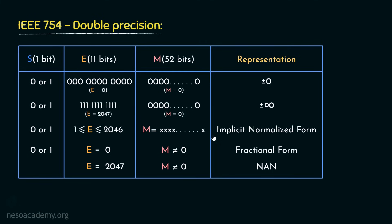Going through the chart: when the exponent bits are all 0s and the mantissa 52 bits are also all 0s, based on the sign bit we can represent positive 0 or negative 0. When the exponent is all 0s and the 52-bit mantissa has any pattern other than all 0s, that represents the fractional form. If the 11-bit exponent has all 1s — representing the decimal value 2047 — and the 52-bit mantissa has all 0s, based on the sign bit it represents positive or negative infinity. If the exponent is 2047 and the mantissa has any pattern other than all 0s, irrespective of the sign bit, it represents Not a Number.